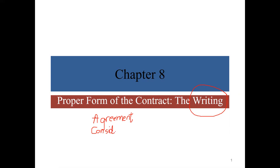We have agreement, consideration, legal capacity, and legal object. You don't have to list these in any particular order, but it's helpful to list them this way to get in the habit. There's nothing magical about this order. If you think a different order is better or you have a mnemonic to help you remember it, feel free to adopt a different order. Now, offer and acceptance are elements of agreement — they are not elements of contract law. They are sub-elements of one of the elements of contract.